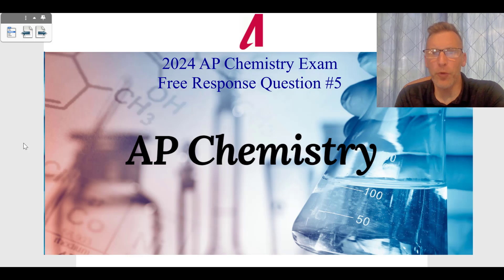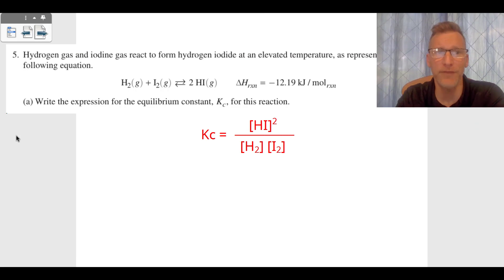Hey, this is Mr. Aiden. This is the 2024 AP Chemistry Exam Free Response Question Number Five. This is a four-point problem, and this is the solution guide to this question number five.